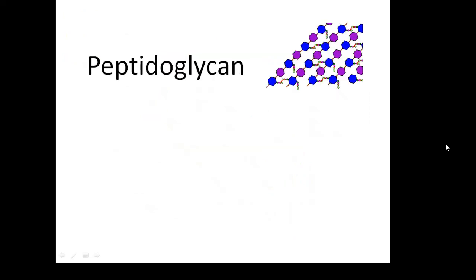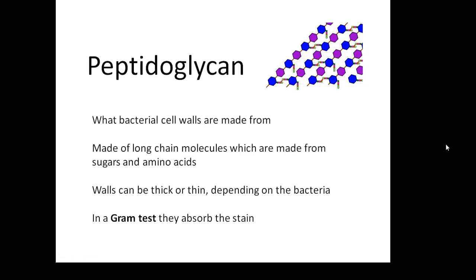Now, peptidoglycan — remember, it's what the cell wall is made of. Bacterial cell walls are made from long-chain molecules made of sugars and amino acids. The walls can be thick or thin depending on the type of bacteria.